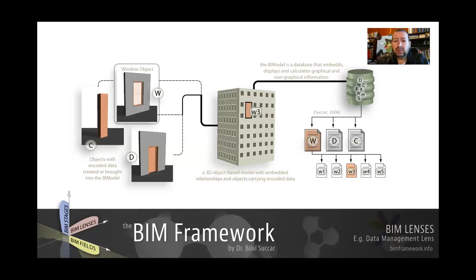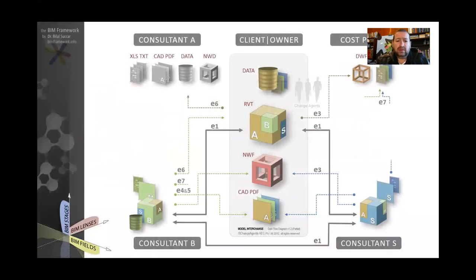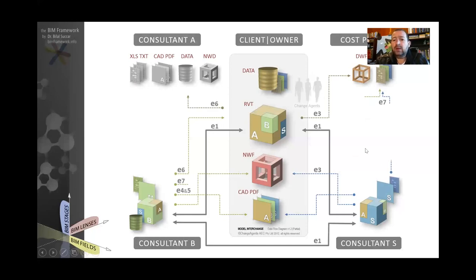This is a data management lens. Another type is a data management filter, which looks at data and file exchanges between consultants and clients, using a specific language from the BIM framework where things are represented as cubes. Here we're looking at consultant A exchanging Excel, text, CAD, and PDF data, while consultant B is exchanging a different type, and consultant S — a structural engineer — and the cost planner is exchanging something else. So this is a way of looking at exchange between different stakeholders by focusing on exchange of data — not ideas or money — within a specific type of project.